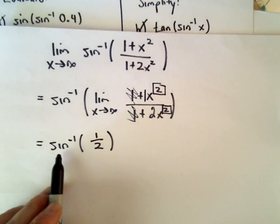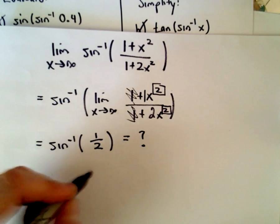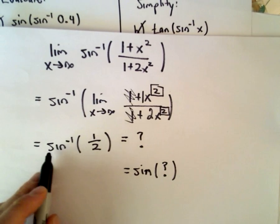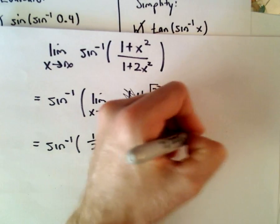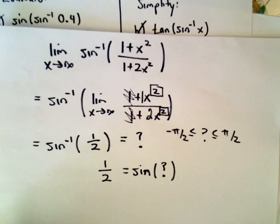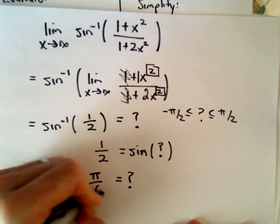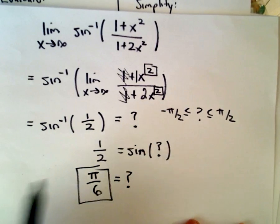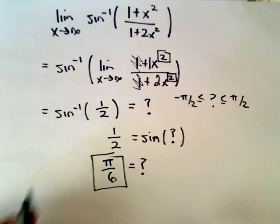So really all we're doing is evaluating inverse sine of 1 half. We can take sine of both sides — sine of inverse sine cancels out — and I'm thinking sine of what angle is 1 half, where the angle must be between negative pi over 2 and pi over 2. Sine of pi over 6 equals 1 half, so the answer is pi over 6.